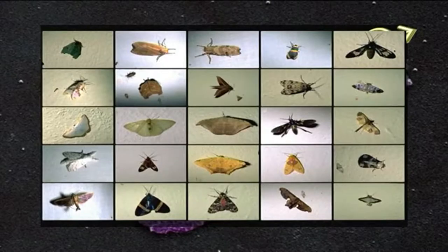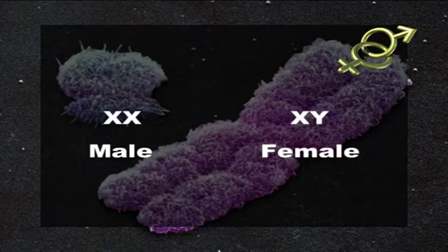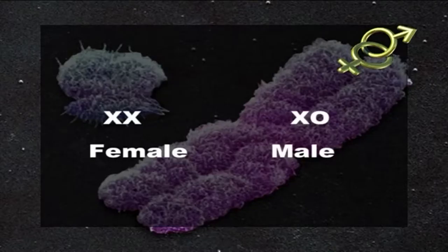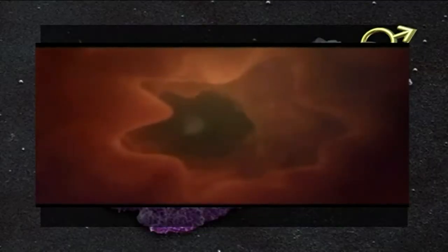In birds, moths, and butterflies, the sex chromosomes are reversed — males are XX and females are XY. In some insects, the Y chromosome is absent; thus a female would be XX but a male would be X0. The 0 indicates that the Y chromosome is absent.